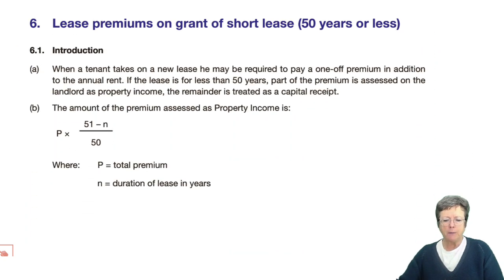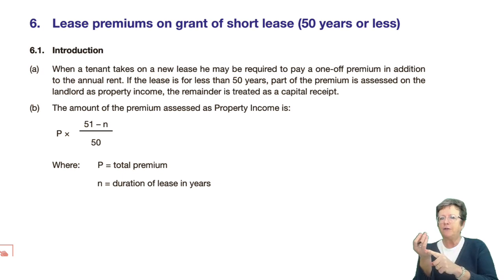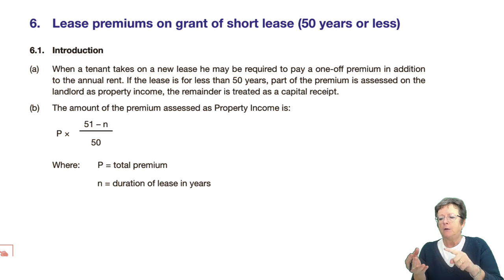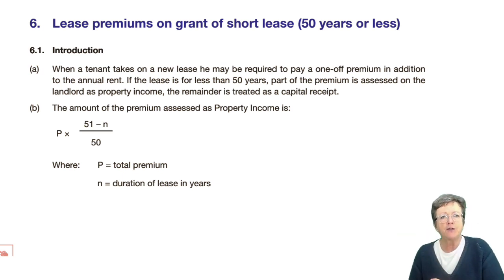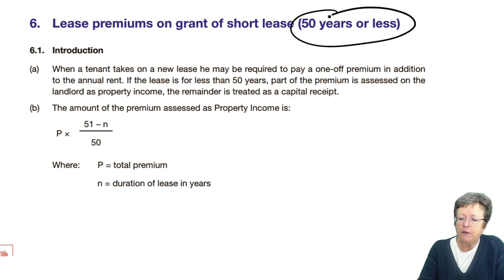Right at the very beginning of this chapter, I discussed the fact that you get your income from property from two places. One would be rent, which we've been discussing — when is the income arising, in advance or in arrears, cash basis or accruals basis, what can you have as expenses, what happens to the finance. We've dealt with all of that. The second source of income could be a lease premium on the grant of a short lease — short lease being 50 years or less.